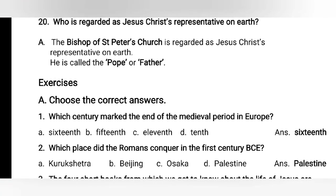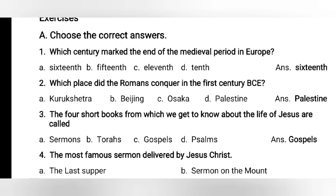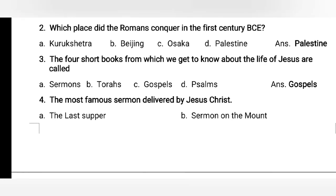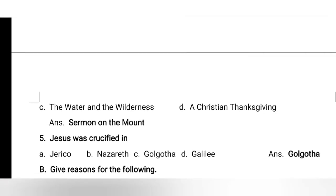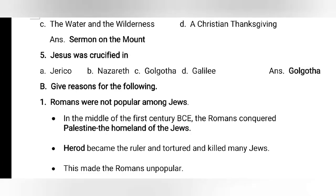Exercises — choose the correct answers. 1. Which century marked the end of the medieval period in Europe? Answer: 16th. 2. Which place did the Romans conquer in the 1st century BCE? Answer: Palestine. 3. The four short books from which we learn about the life of Jesus are called the Gospels — Matthew, Mark, Luke and John. 4. The most famous sermon delivered by Jesus Christ is the Sermon on the Mount. 5. Jesus was crucified in — answer: Golgotha.